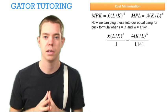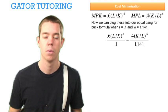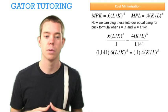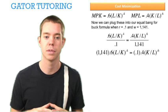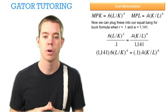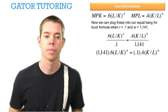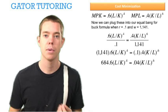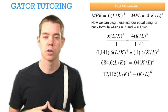Be careful not to make mistakes, because there are many steps involved. We cross multiply and get 1,141 × 0.6(L/K)^0.4 = 0.1 × 0.4(K/L)^0.6. Simplifying, we get 684.6(L/K)^0.4 = 0.04(K/L)^0.6. We divide through by 0.04, and from here we need to get creative.